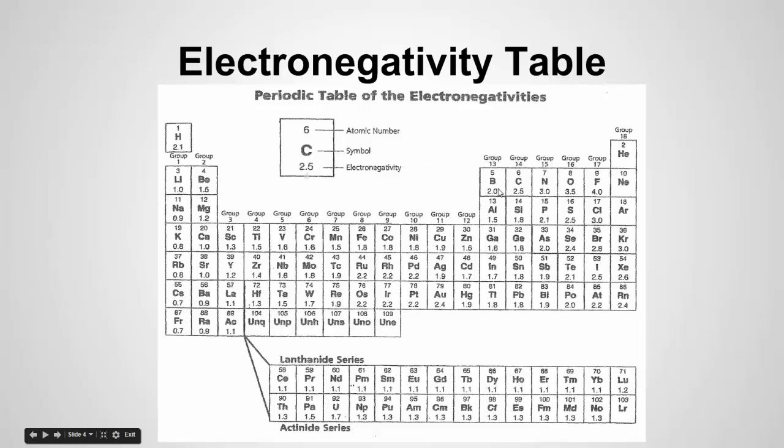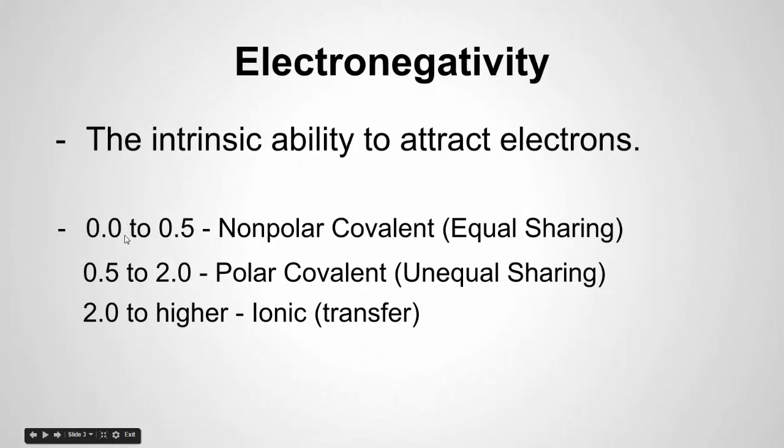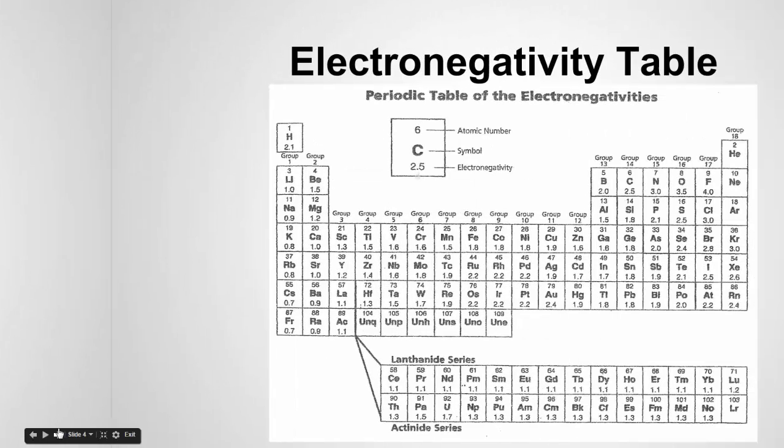For instance, if I wanted to look at a carbon-hydrogen bond, it would be 2.5 minus 2.1. That would be 0.4. And if we take a look and go back, we see that 0.4 would fall in the non-polar covalent region. So if we have carbon chains that just have a bunch of hydrogens, which is a very common thing in organic chemistry, if we have nothing but a bunch of CH bonds, all of those bonds would be considered non-polar covalent. The hydrogen and carbon are going to have a pretty close to equal sharing of electrons.